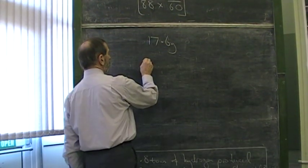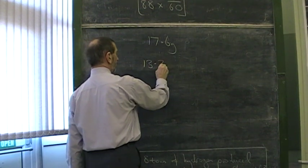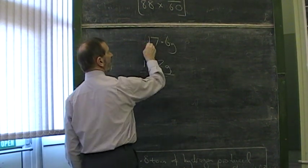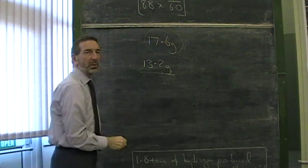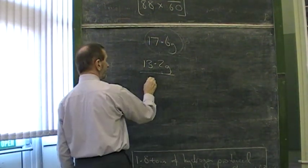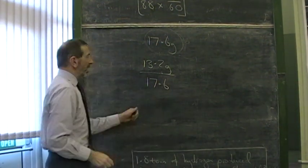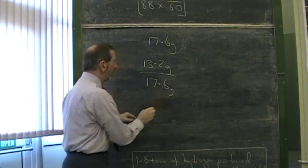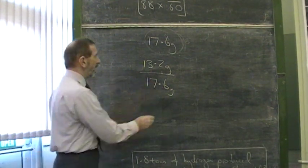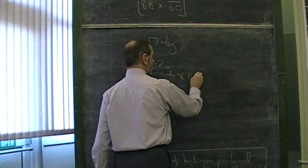So, what we're saying is, we actually got only 13.2 grams. When there's a so-called theoretical yield, what we thought we would get, was actually 17.6. So we compare what we did get with what we thought we'd get.